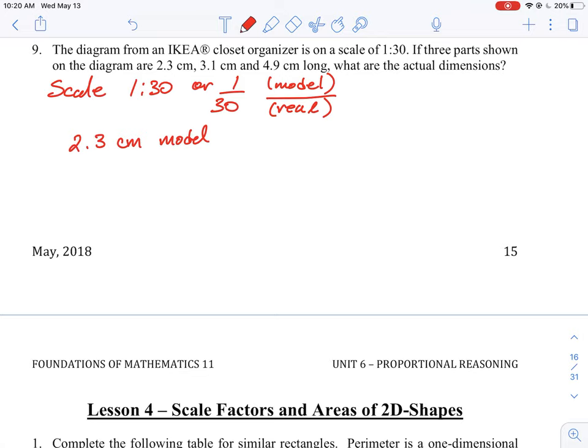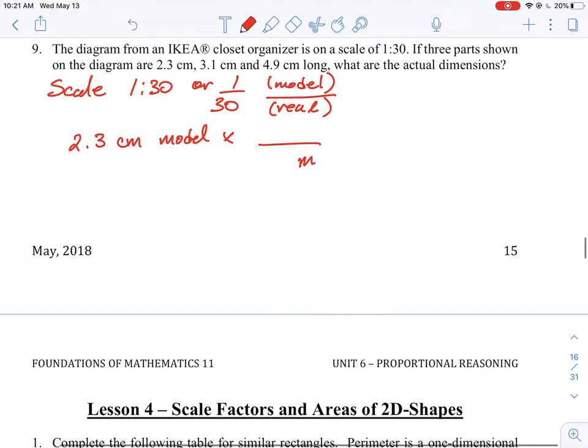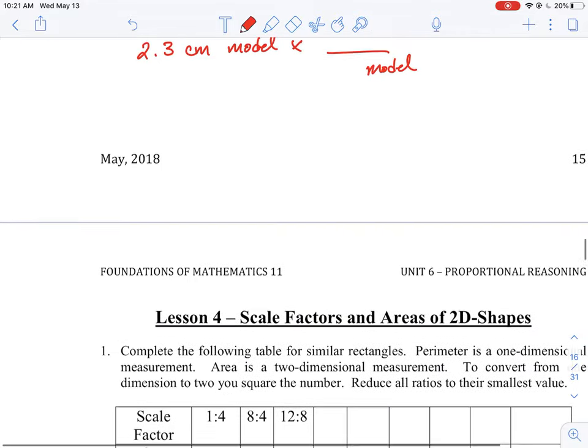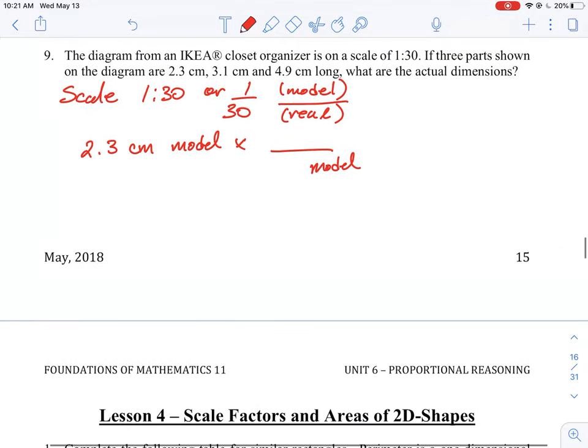So if you think back to what we did with unit analysis, we have 2.3 centimeters but it's the model measurement. So I need to calculate, I need to multiply by the scale ratio such that the model measurement cancels out, cancels out and leaves us with the real measurement.